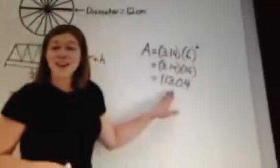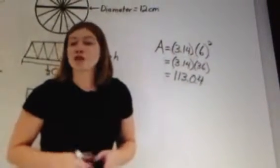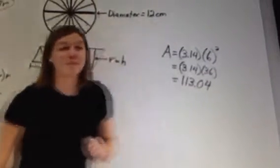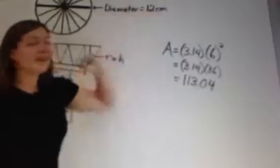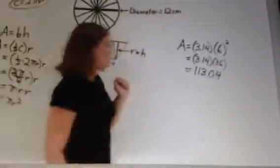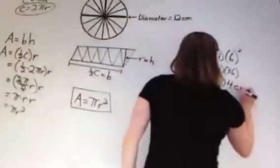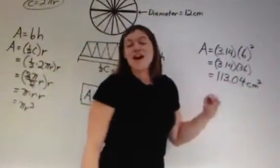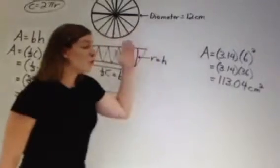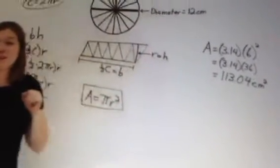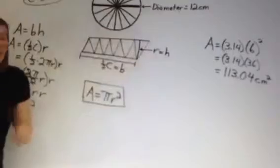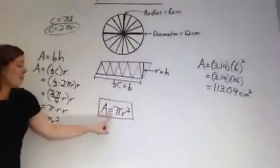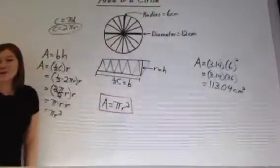Now we have the area. Remember, area is measured in square units. We are working with centimeters, so our answer must be in centimeters squared. The area of this circle is 113.04 centimeters squared. Area is equal to pi times the radius squared.